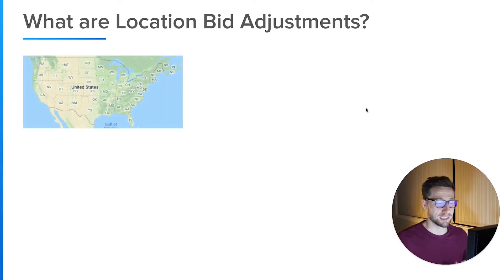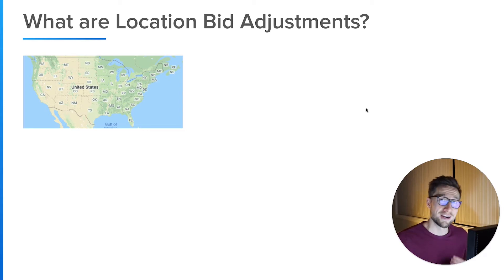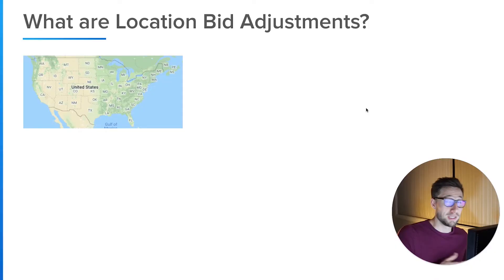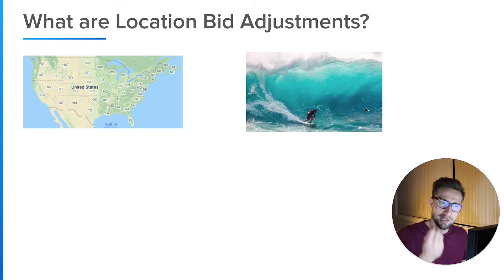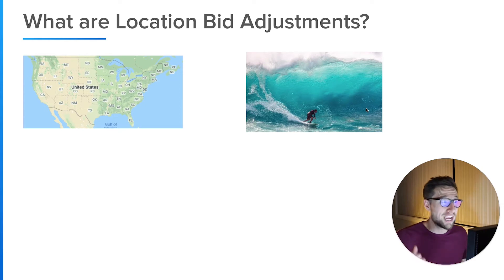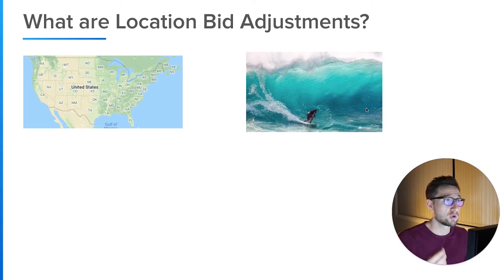So what are location bidding adjustments? Say for example you have an e-commerce store and you're selling to all of the US states — say you're selling surfboards. You're going to find that people in different states convert differently on your website. Maybe people near the coast and beaches actually want to buy surfboards more than people in the middle. We can look at the data, use our intuition, and tell Google: here's our surfboard campaign — if someone is in a location we think is going to convert better, please increase the bid just for that search. These are called location bidding adjustments.